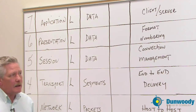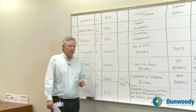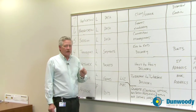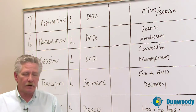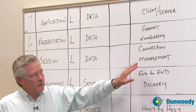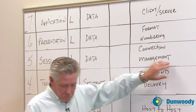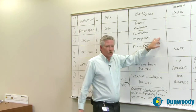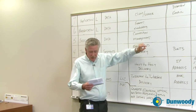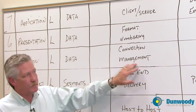Let's use RDP as an example — remote desktop. When you start an RDP session, it's working at layer five, because that's a logical connection between you and the computer that you're remoting into. The session layer also offers full duplex, half duplex, and simplex operation, and establishes a checking point for adjournment and termination and restart procedures.